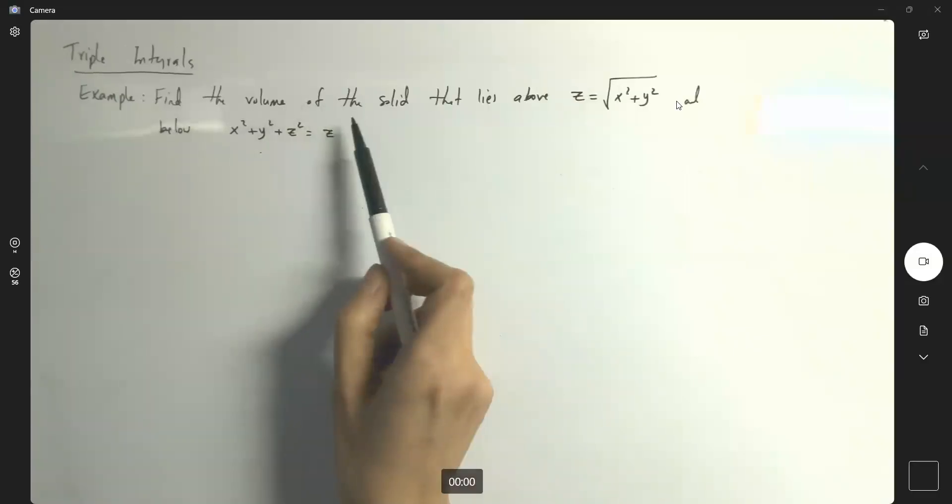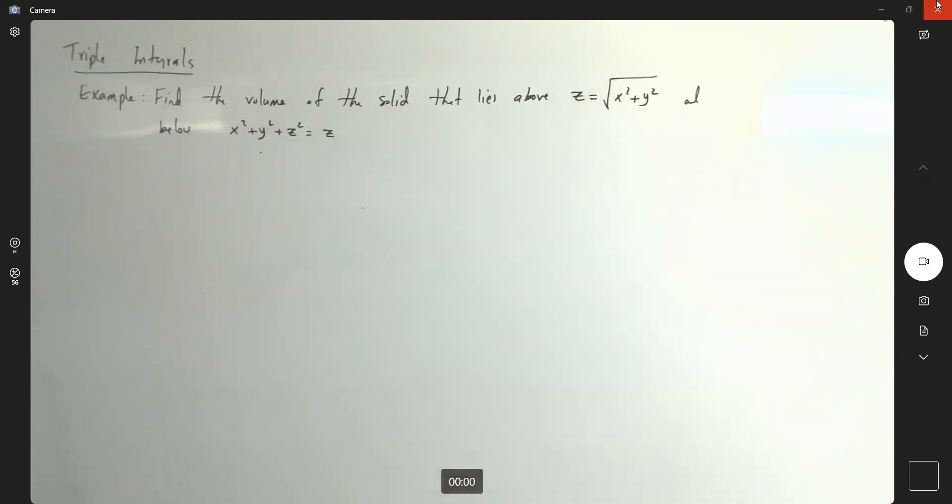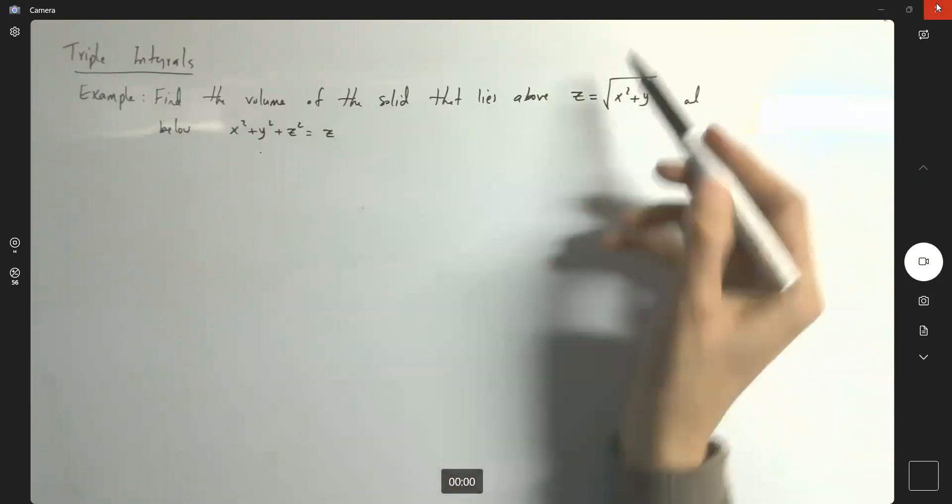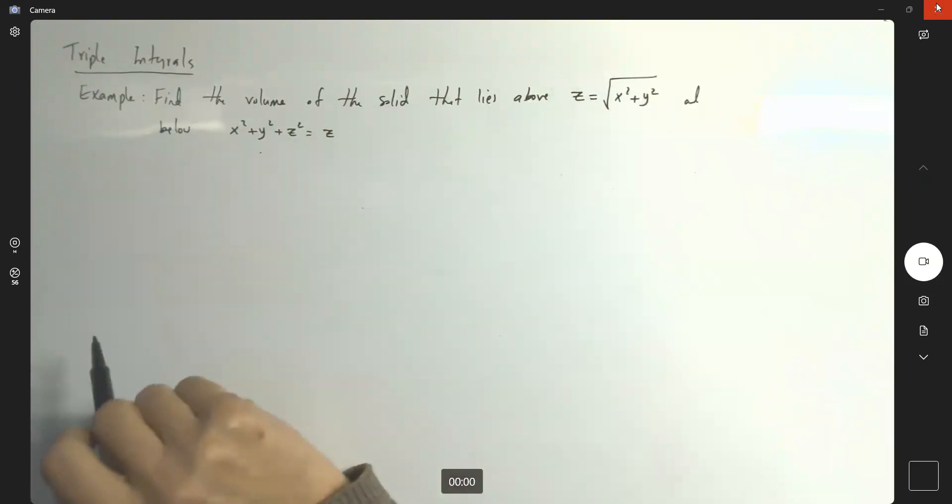The question says find the volume of the solid that lies above the cone z equals square root of x squared plus y squared and below the sphere x squared plus y squared plus z squared equals z.